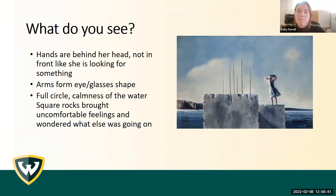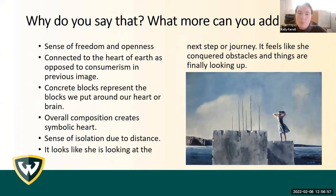When looking at the second image, Sea Wall, participants really focused on the figure and her positioning, and began to look at the entire composition as a whole. When asked why they saw that and what more they could add, a common theme emerged of freedom and openness. Many talked about the heart and being connected to the land, blocks around the heart, a narrative of a journey — why is this figure there, what brought her there, and where is she going?